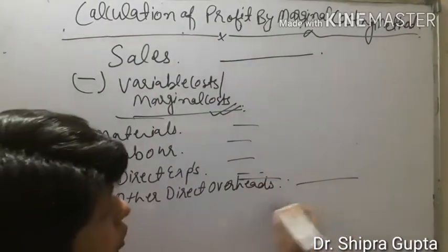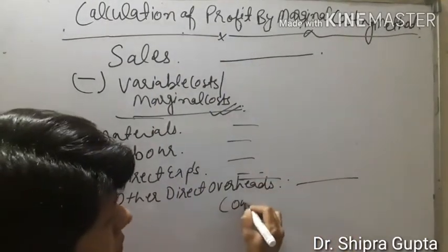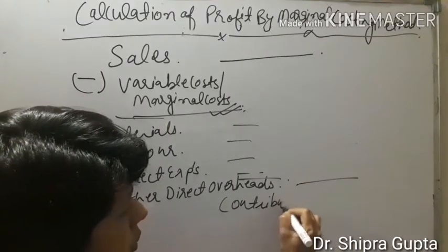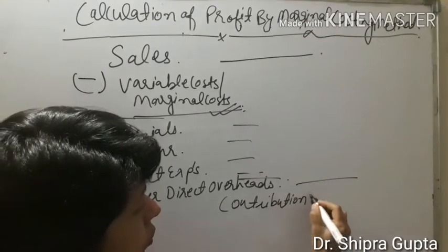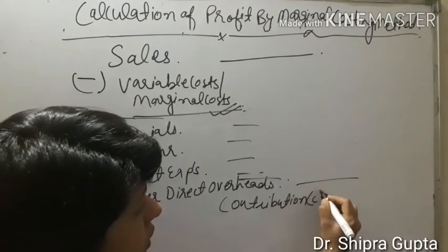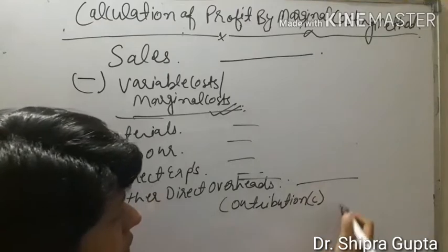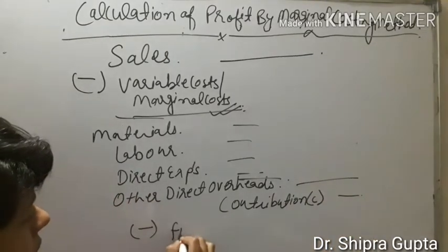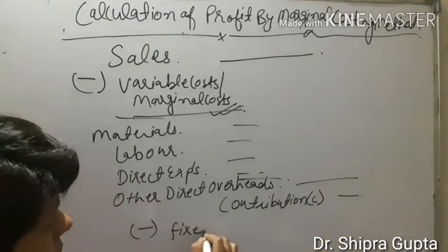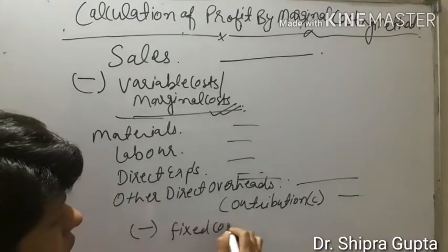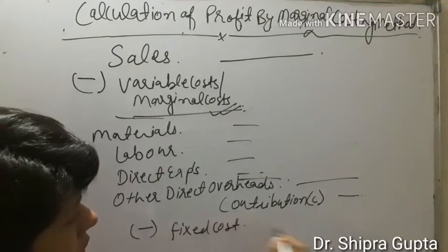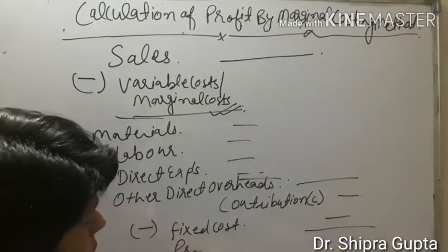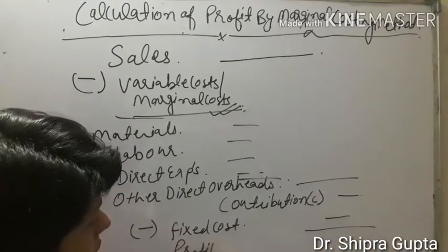After deducting variable cost from sales, contribution will come. Contribution is denoted by the sign C. Then we deduct fixed cost, and then profit or loss will come.